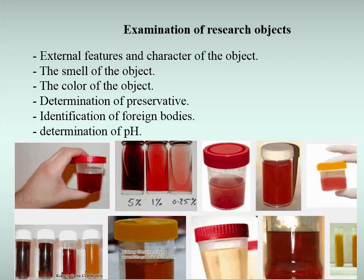To determine the pH of the biological material, a small amount of the test object, finely chopped with scissors, is placed in a test tube; the appropriate amount of distilled purified water is added, and the test tube is shaken well. The aqueous extract is separated from the solid particles of the biological material. The acidity or basicity of the extract is then determined with the help of indicator papers. Two porcelain plates are taken, one with blue and the other with red litmus paper, and a drop of aqueous extract is added to both papers.